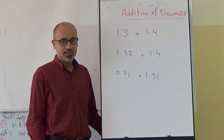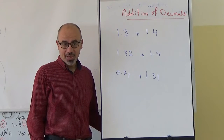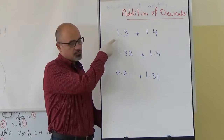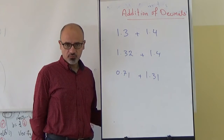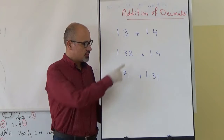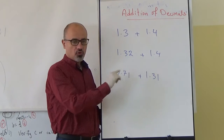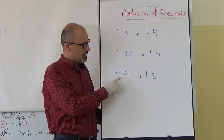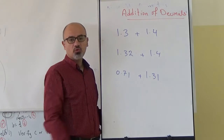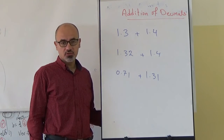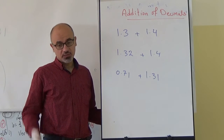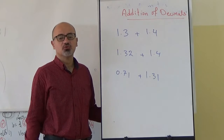Hi again. Now we want to add decimals. We have the following sums: 1.3 added to 1.4, we have 1.32 added to 1.4, and finally we have 0.71 added to 1.31. We want to know the answers, so let's see how to do it.